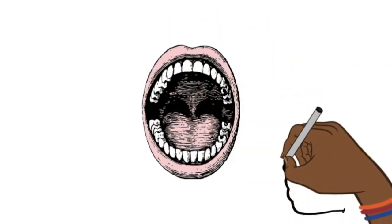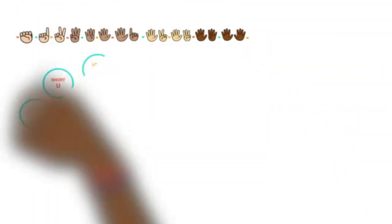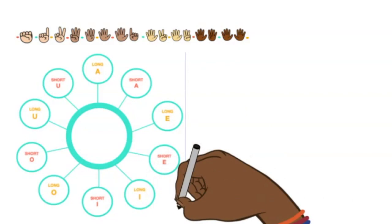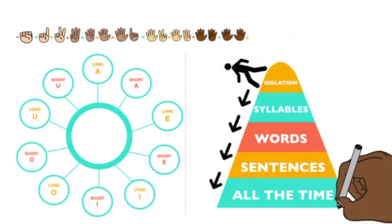You know what your lips and tongue have to do to make your sound. You're able to say your sound by itself and in syllables. So now you're walking down the mountain and you're ready to practice it in words and maybe sentences.